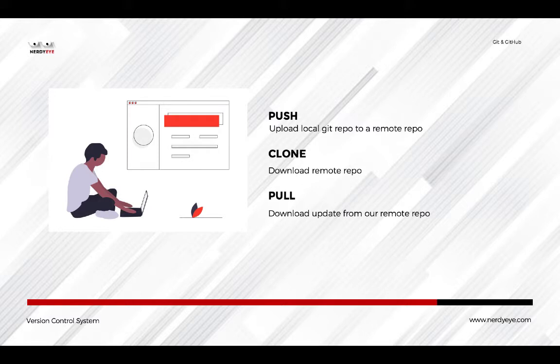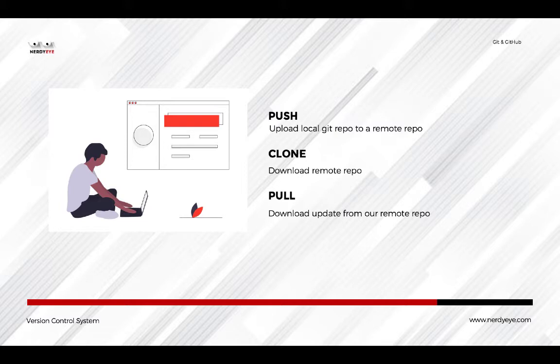There are three major things we want to learn when working with GitHub: push, clone, and pull. Push is basically uploading our local repository to a remote repository — from a local machine to GitHub. Clone is to download a remote repository that already exists. Pull is to download the updates from our remote repository.